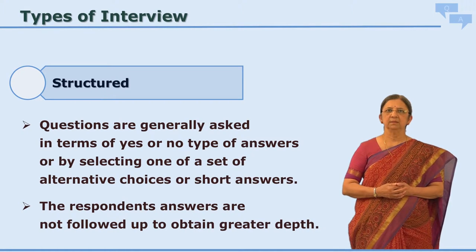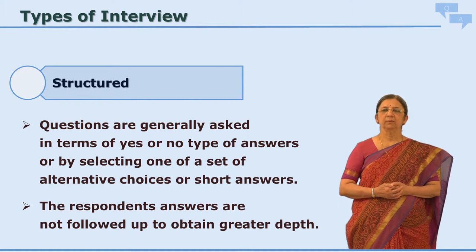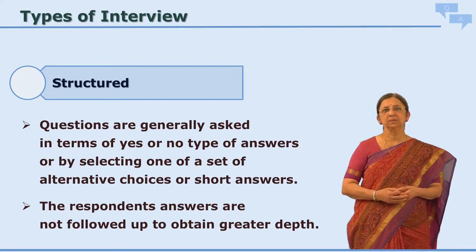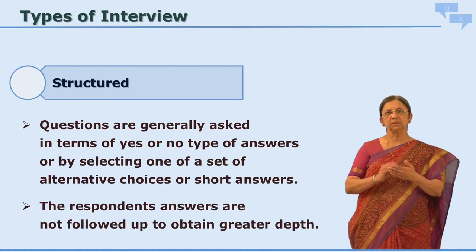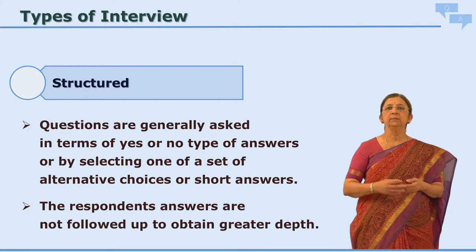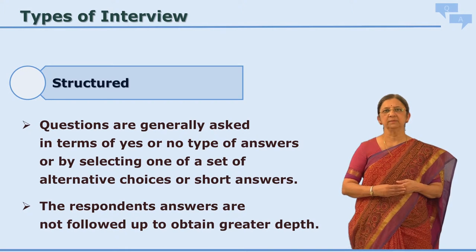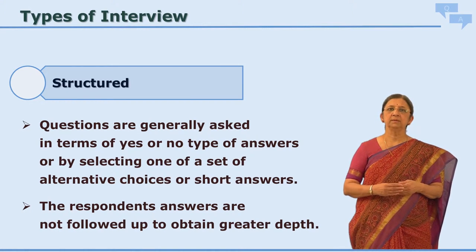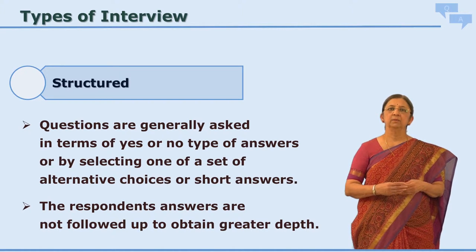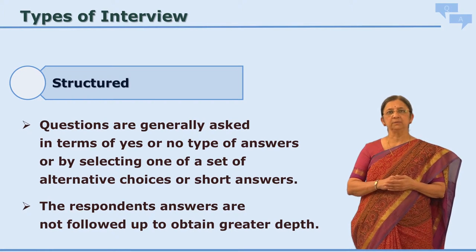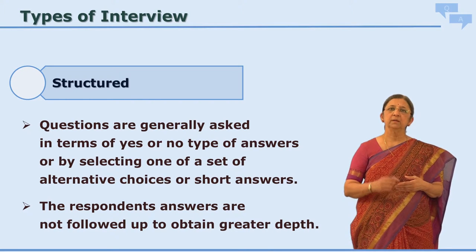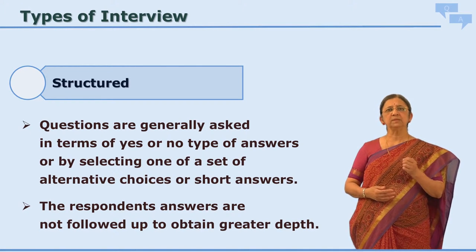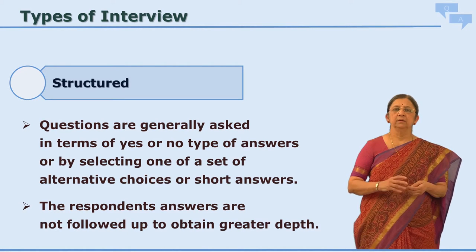Because this is a structured interview, we expect structured answers, and naturally there would be alternatives given. If you start asking open-ended questions and respondents go in different directions, the interview becomes semi-structured or unstructured. So the structured interview has definite questions and may have yes or no type answers, or you may give alternatives. For example, when you ask 'do you watch television?', the answer should be yes or no. If yes, you ask how often — and alternatives are given: once a week, twice a week, thrice a week, more than four days, or every day. The respondent answers only one of these.